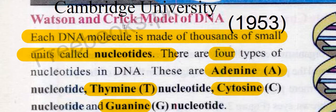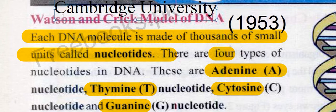Students, our next topic is Watson and Crick model of DNA. Watson and Crick were Cambridge University scientists who in 1953 discovered this model of DNA.